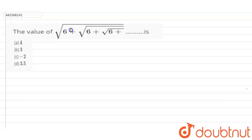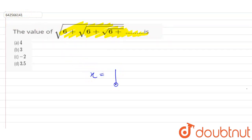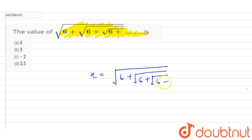So the question is: find the value of √(6 + √(6 + √(6 + √(6 + ...)))) up to an infinite number of terms. So let x equal to √(6 + √(6 + √(6 + ...))) up to an infinite number of terms.